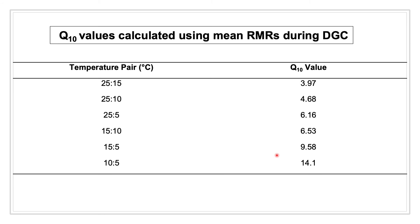We can still see the familiar pattern, however, that there exists an increase in Q10 value between the significantly different 25 and 10 degrees Celsius treatment pair and the 25 and 5 degrees Celsius treatment pair. Once more, as temperature decreases further from average, there is a larger rate of change in RMR.